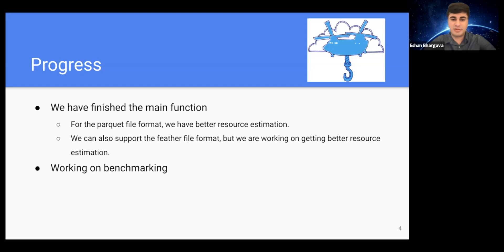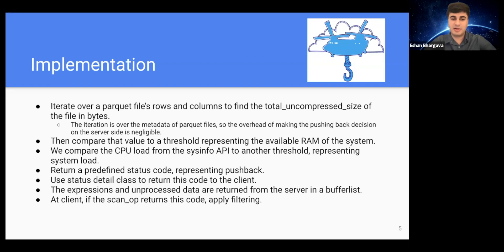In terms of progress, we have finished the main pushback functionality. For the Parquet file format, we have better resource estimation, and we are working on getting better resource estimation for other file formats as well. For benchmarking, we're testing three cases: pushback always enabled, never enabled, and dynamic. At a high level, the implementation iterates over a Parquet file's rows and columns to find the total uncompressed size in bytes, done over the file metadata so the overhead of the pushback decision on the server side is negligible. We then compare that value to a threshold representing available RAM and compare CPU load from the sysinfo API at the one-minute load average to a system load threshold.